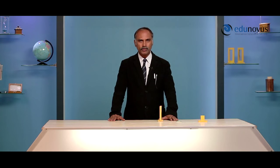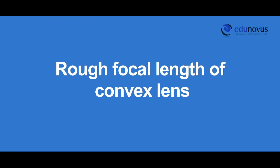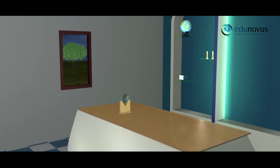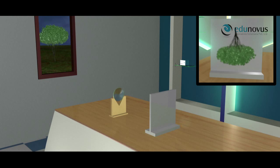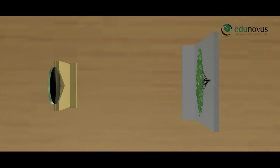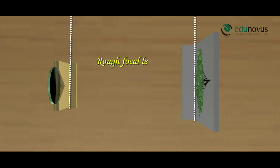Let us start by determining the rough focal length of the convex lens used in the experiment. Face the lens towards a distant object — for example, a tree visible through the window — and obtain its inverted image on a screen. Move the lens forward and backward until you get a sharp image. Then, with the help of a scale, measure the distance between the lens holder and the screen, which is the rough focal length. Here, it is 10 cm.